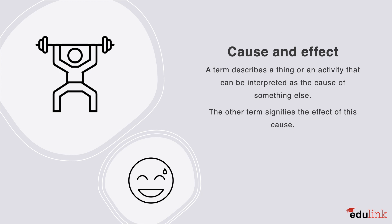The next relation type might sound familiar to some of you. Cause and effect. This is when a term describes a thing or an activity that can be interpreted as the cause of something else. The other term signifies the effect of the cause. For example, eating is the cause of feeling full. As well as working, which may cause one to be tired. And likewise, exercising might cause one to sweat.